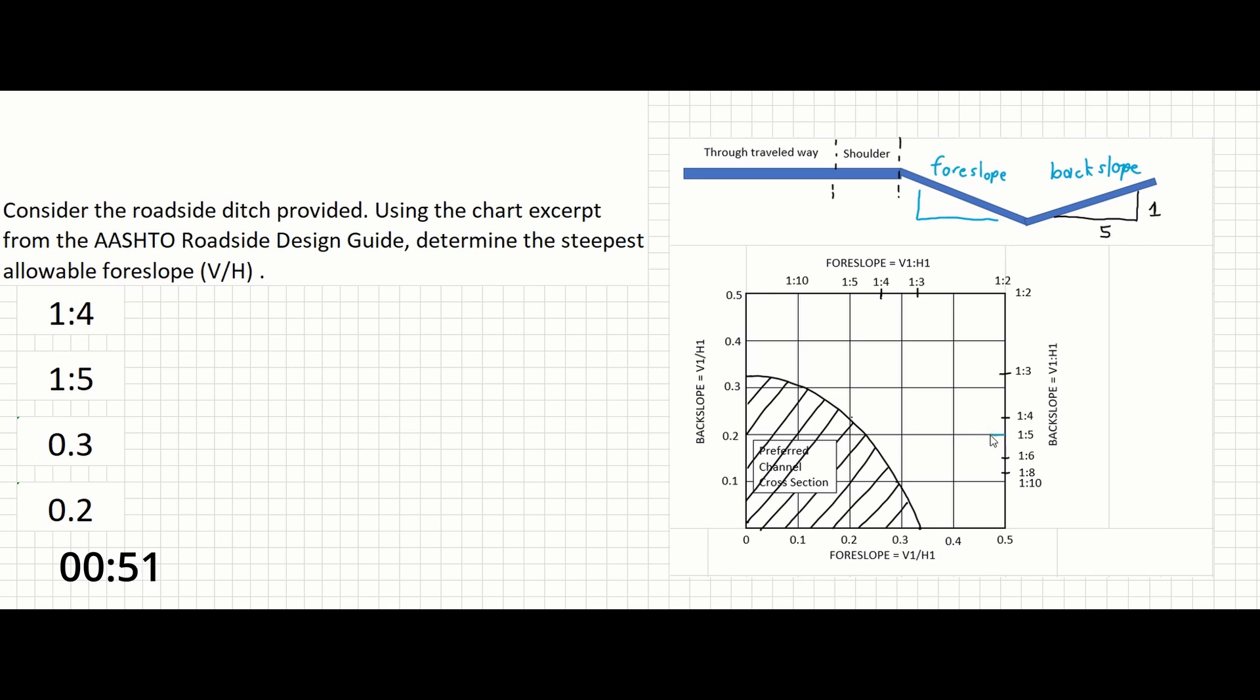Once we reach the edge of the preferred channel cross-section, we can draw this line either up or down. The problem asks for units of vertical slash horizontal, so let's draw this line downward.